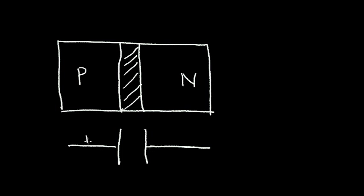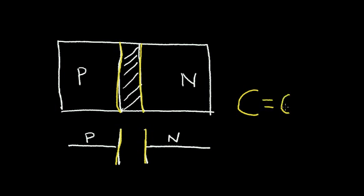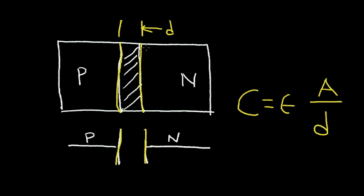I have a P terminal and an N terminal. This region can be thought of as a plate on a capacitor, and this N region can be thought of as a plate. So, this P-N junction has the characteristics of a capacitor. Recall that the equation for capacitance is epsilon times the area of the plate divided by the distance between the plates. The distance between the plates, D, is the dimension of our depletion region.